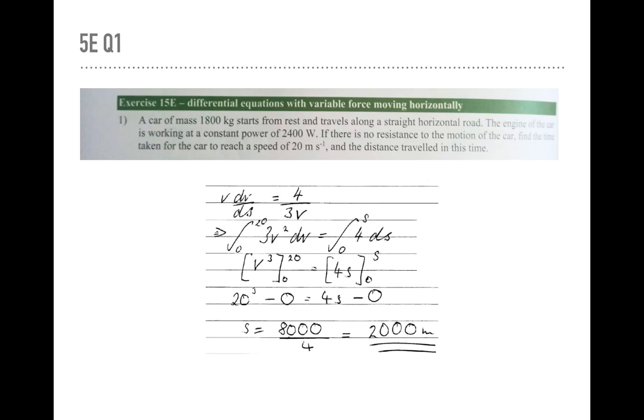Now the final part of the question, what's the distance travelled in this time? So we go back to the original equation, which was 1800A is equal to 2400 over V. And in this case, when we divide by the mass, we have A equals 4 over 3 V. And we're looking for the distance, so let A equal to V dv ds. Rearrange, integrate and you get S equals 2000.